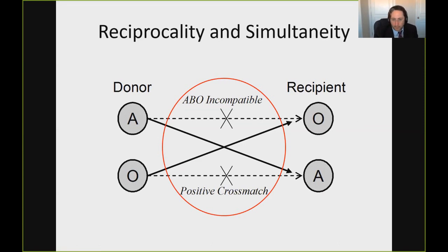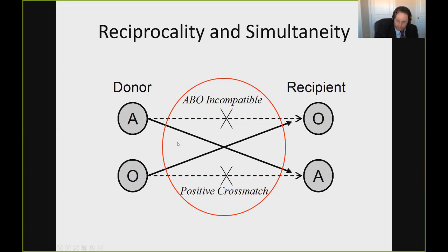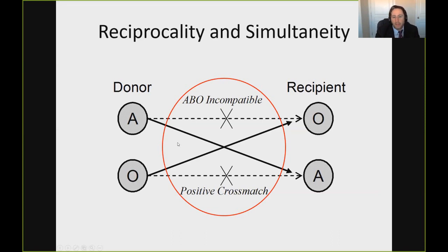If both options are available, which should somebody choose? The advantages of desensitization versus kidney exchange really boil down to the difference between PRA and DSA. PRA — panel reactive antibody — measures how broadly sensitized somebody is: what percent of the population would this person be expected to have a positive crossmatch with. PRA dictates your ability to match. If you are broadly sensitized, you'll have a much harder time finding a match in kidney exchange. DSA — donor-specific antibody — dictates your ability to undergo desensitization.